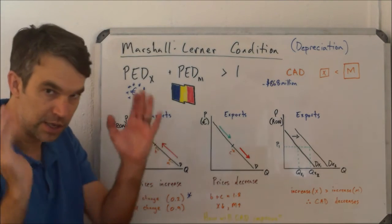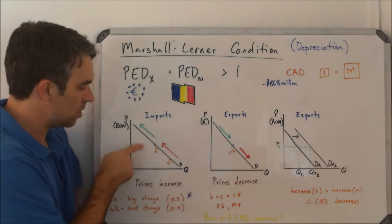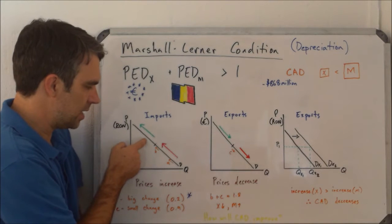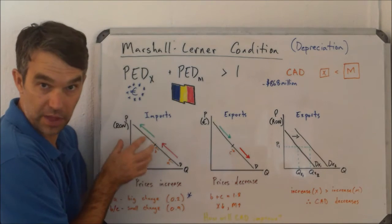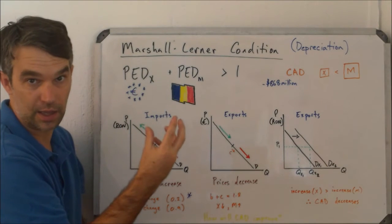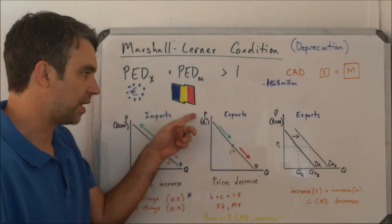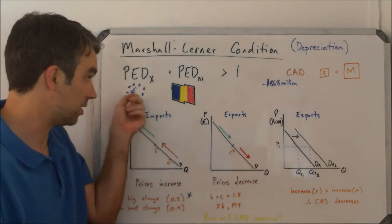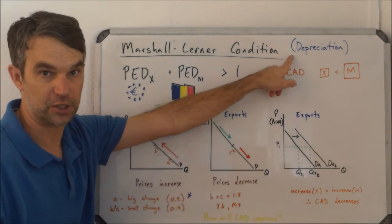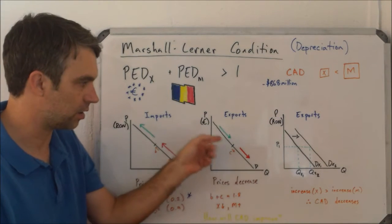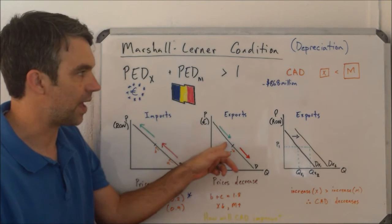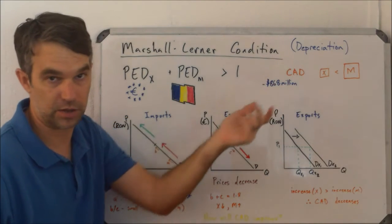The logic is: if imports are going to increase in price due to depreciation, we move away from the midpoint. The midpoint is where the value of imports is maximized, so moving away from it will shrink that value. Likewise for exports — prices are expressed in euros, so Europeans buying Romanian goods will see prices decrease due to depreciation. They move down the demand curve toward the midpoint, meaning the value of X grows. Any values in the top half are greater than one, so the Marshall-Lerner condition would be satisfied.